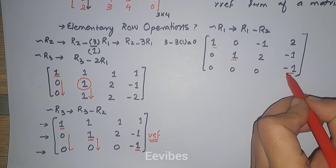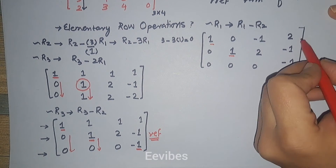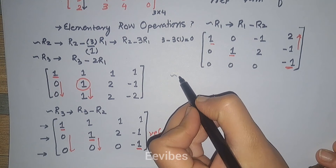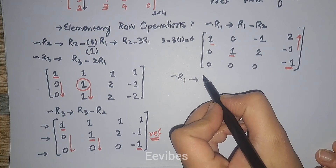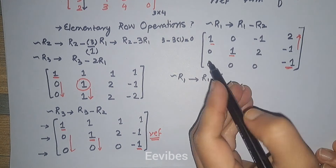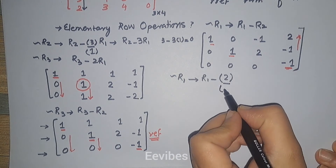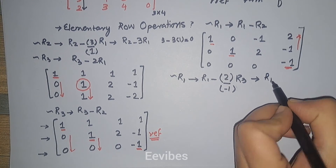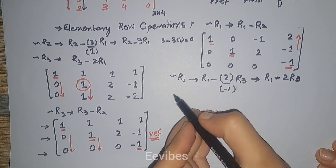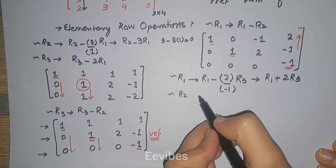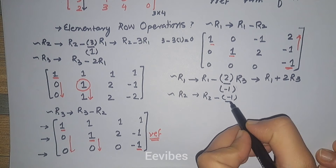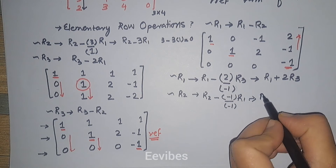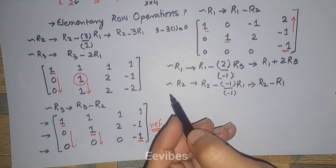Now looking at the third pivot, we have to make all entries above it equal to zero to get the RREF form. The change in R1 is R1 minus the value we want to make zero, which is two, divided by the pivot minus one, times R3. This simplifies to R1 plus two times R3. Similarly, the operation on R2 is R2 minus minus one divided by minus one times R3, which simplifies to R2 minus R3.